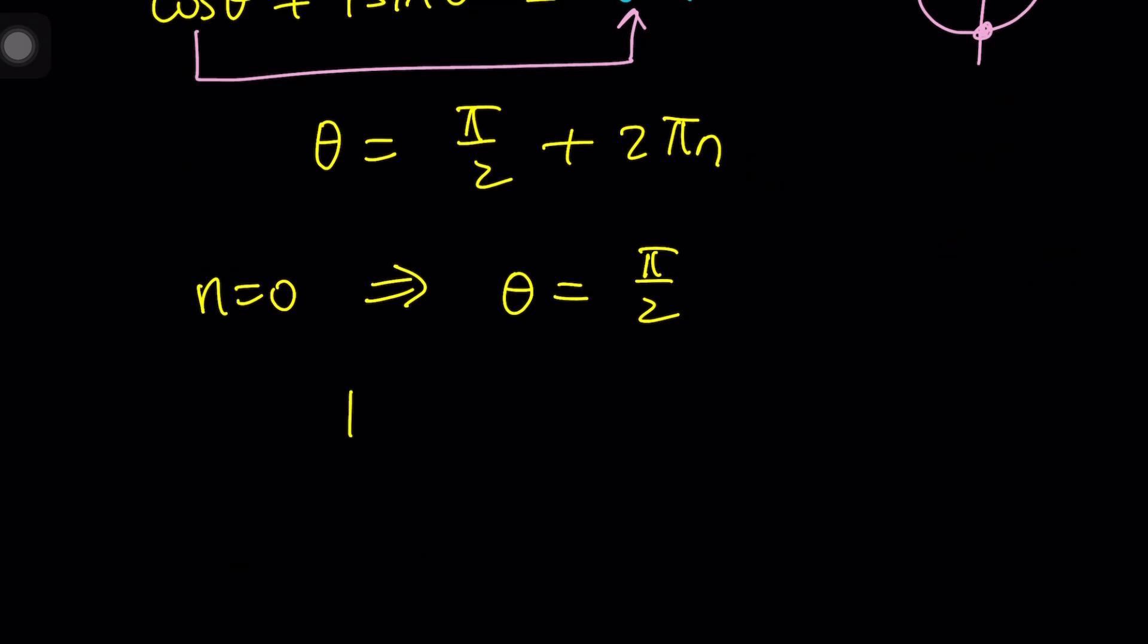Let's go ahead and do that. We have 1 plus e to the iθ divided by 1 plus e to the negative iθ. So if θ is pi over 2, this is going to give us 1 plus e to the power i pi over 2. And that's going to be 1 plus e to the power negative i pi over 2.